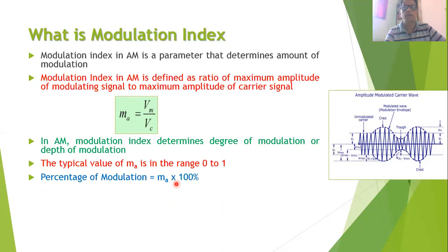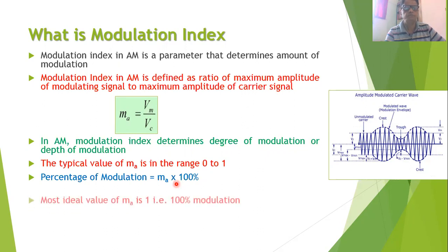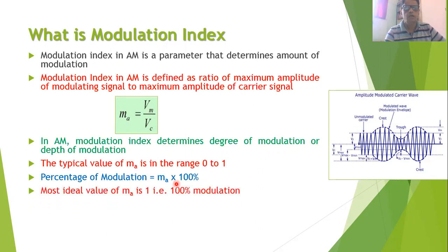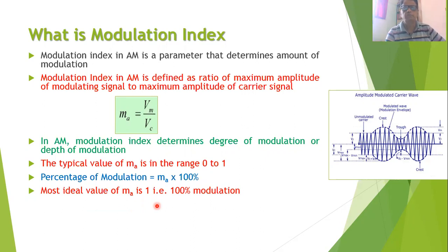The most ideal value of m_a is 1. When the modulation index m_a is equal to 1, we get 100% modulation, and this is treated as the most ideal case in amplitude modulation.